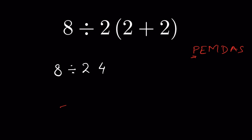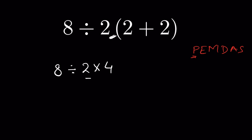Now you can see there is no sign here. When there is no sign, we put multiplication — that means there is an implied multiplication when there is no sign. If you are following PEMDAS, M is written before D, which means you would do multiplication first: 8 divided by 2 times 4.